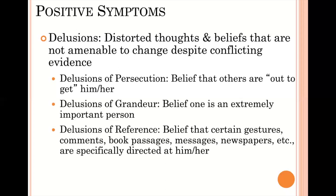Another form is delusions of grandeur, where the individual believes they are an extremely important or famous person — like believing they are the president or can end world starvation. Then there are delusions of reference, which are also fairly common. Here people believe that certain gestures, comments, book passages, or newspapers are a specific reference directed at them. For example, someone might think that every time the professor clicks the top of their pen, it is a special message telling them to do something, or giving them a special message about an upcoming exam.